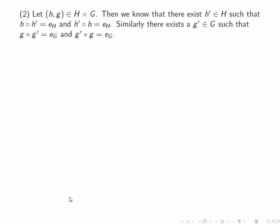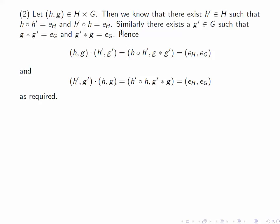Similarly, there exists an inverse of the element g, say g prime, that satisfies g star g prime equals E_G and g prime star g equals E_G. Then we claim that the pair (h', g') is the inverse of (h,g).